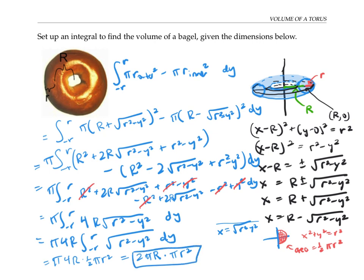That's kind of interesting. The volume of my torus shape is exactly the area of this little bagel chip cross section times the circumference of the circle formed by the big radius R.